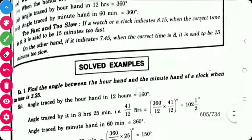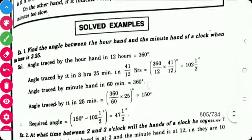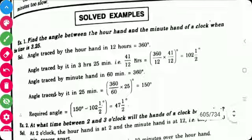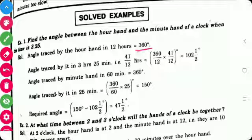Now, we will solve examples. First example is, find the angle between hour hand and minute hand of a clock when the time is 3:25.